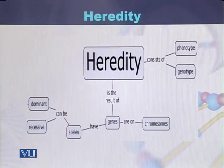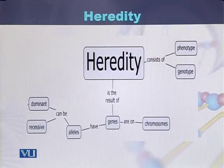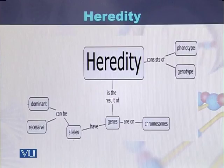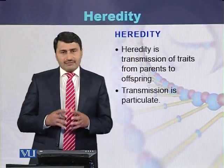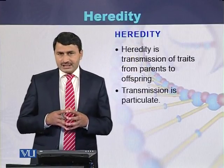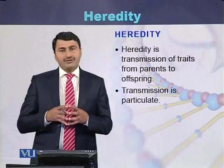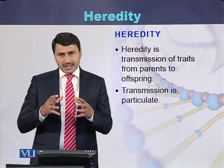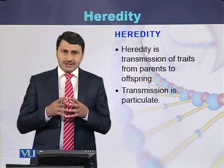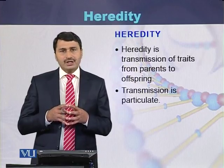To conclude, heredity consists of phenotype as well as genotype and is the result of genes. Genes are present on chromosomes, and genes have alleles. Alleles can be dominant or recessive. Heredity is the transmission of traits from parents to offsprings, and this transmission is particulate in nature.